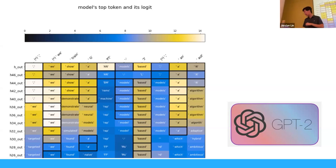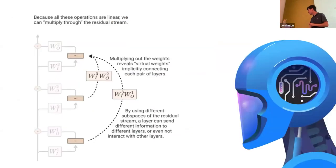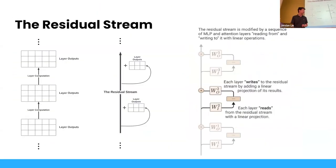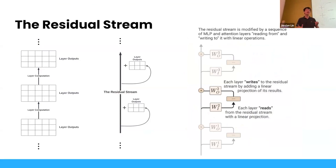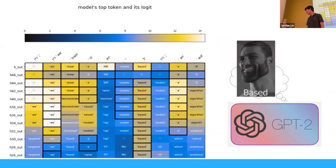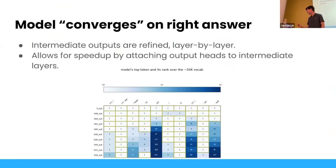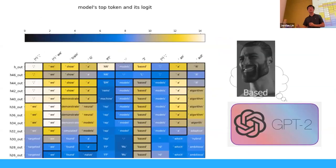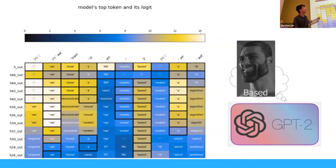This is actually not that strange — we know the residual stream is only modified in small modifications by each layer, essentially refining. So each layer is working with something almost like a finished product and just adds finishing touches. The model is converging on the right answer, slowly having inside the residual stream what it thinks the right answer will be, and just refining it as the layers get deeper.